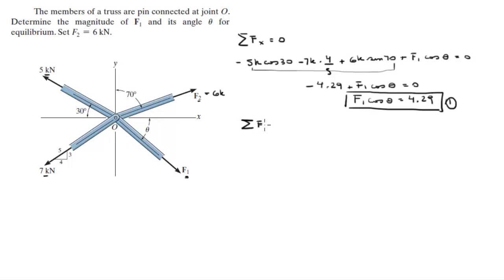So you know that the sum of the forces in the y are zero in statics. So the y component of this 5k is 5k sine of 30, the y component of this 7k is minus 7k times 3 over 5.